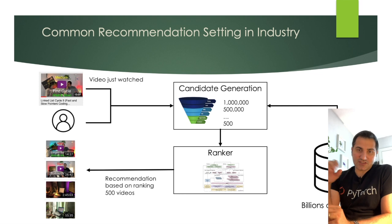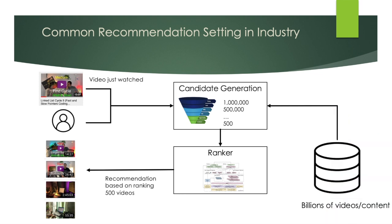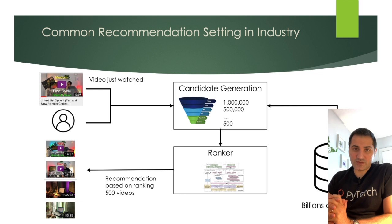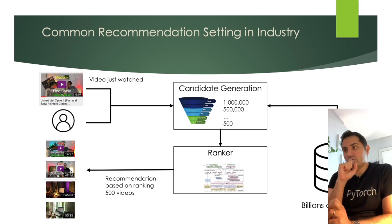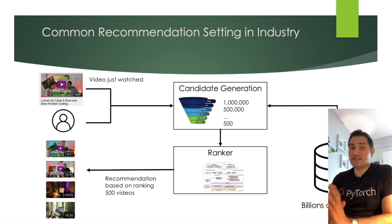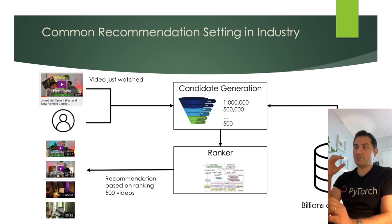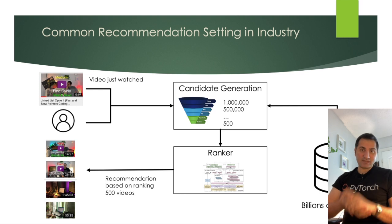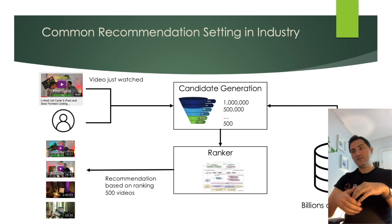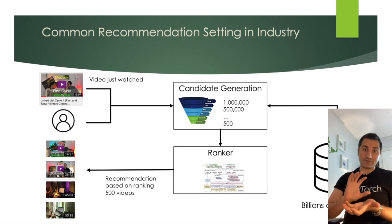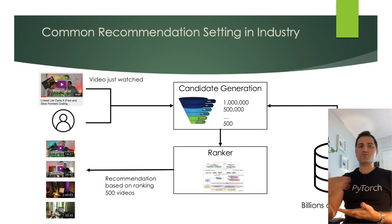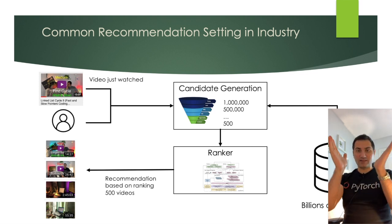Let's focus on YouTube. YouTube has billions of videos, and using a very sophisticated deep neural network to rank all those billions of videos and show them to the user would not be efficient. Instead, they follow the two-stage pattern: from the billions of videos corpus, they select some candidates — narrowing down from one billion to maybe 500 — and then use a sophisticated model to rank only those candidates.